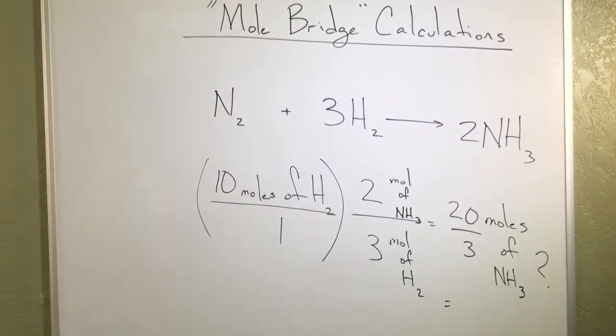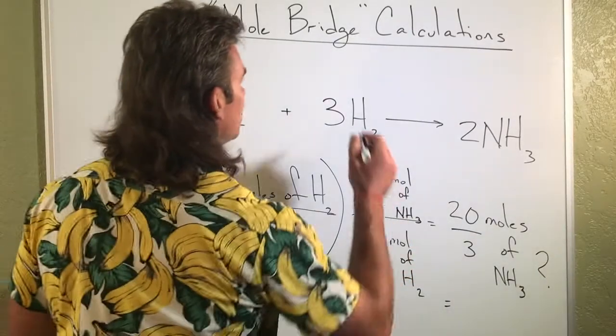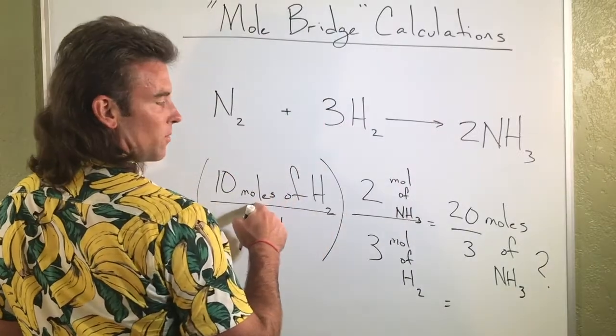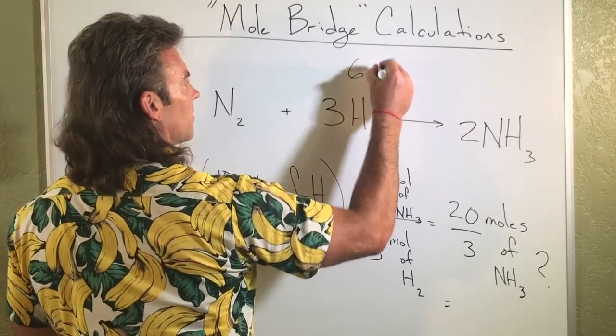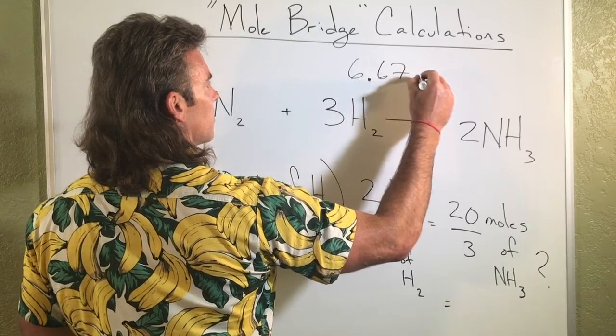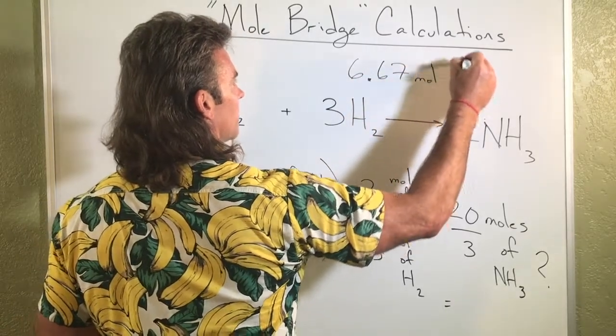So what I got is that if I started with 10 moles of H2, I could make about this many moles of ammonia.